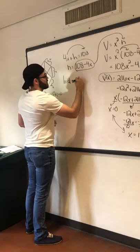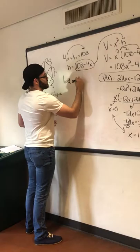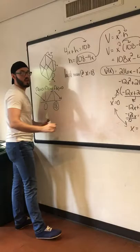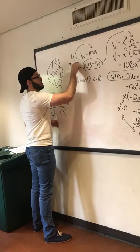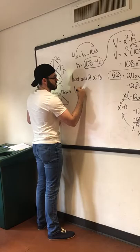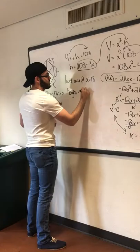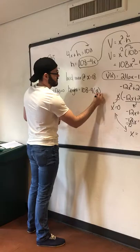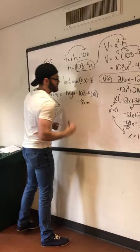So now that we have our local max at X equals 18, we can plug it back into the 4X, which is for the girth and the height equation, to get the two dimensions they were asking for, which was the girth and height. So for the height, we have 108 minus 4 times 18, and you get 36 inches.